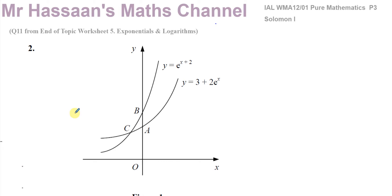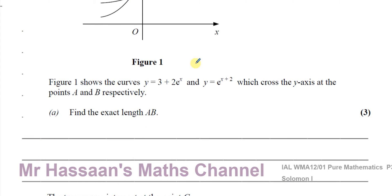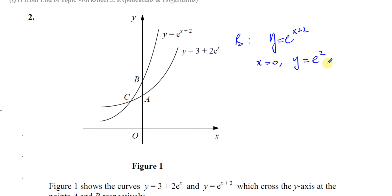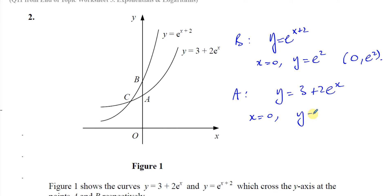We have to find the y-intercepts of each graph. For y equals e to the power of x plus 2, when x equals 0, y equals e to the power of 0 plus 2, which is e squared. So the coordinates of point B are (0, e²). For point A, the equation is y equals 3 plus 2e to the power of x. When x is 0, y is 3 plus 2e to the power of 0, and since e to the power of 0 equals 1, y equals 5. So A is the point (0, 5).